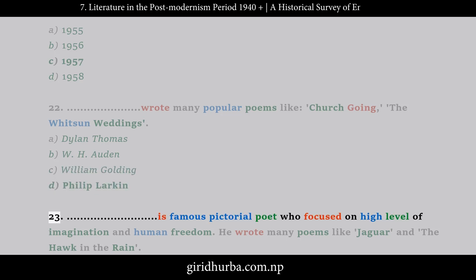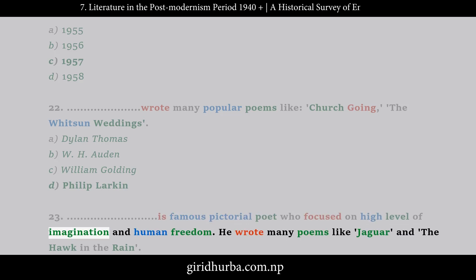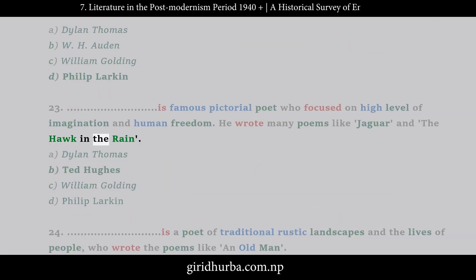Question 23: Who is a famous pictorial poet who focused on a high level of imagination and human freedom, writing poems like Jaguar and The Hawk in the Rain?